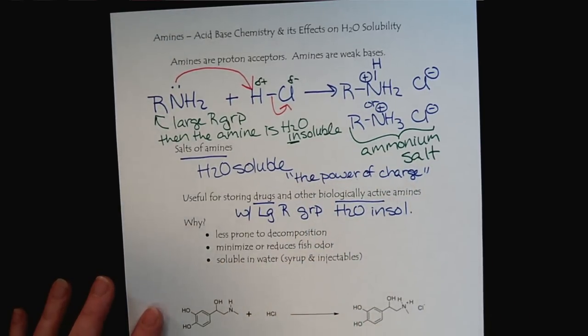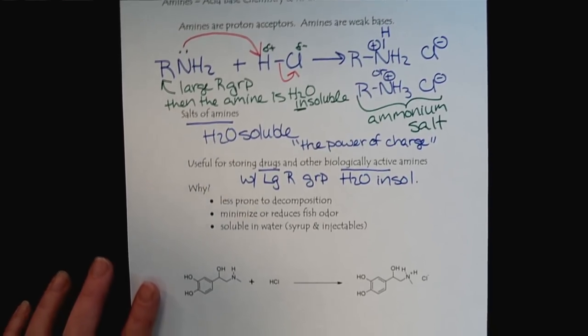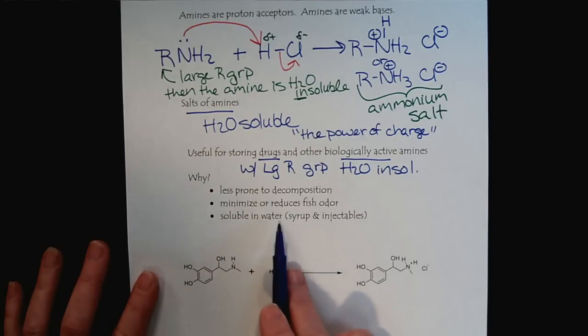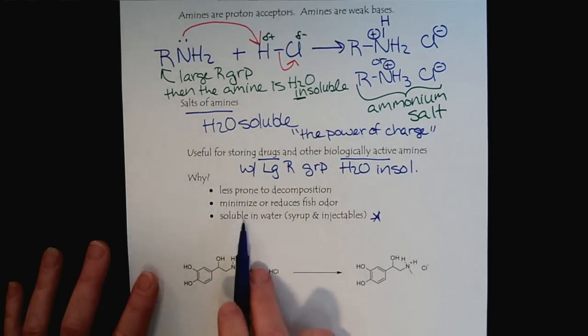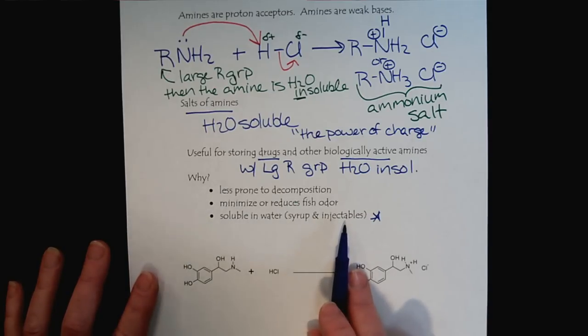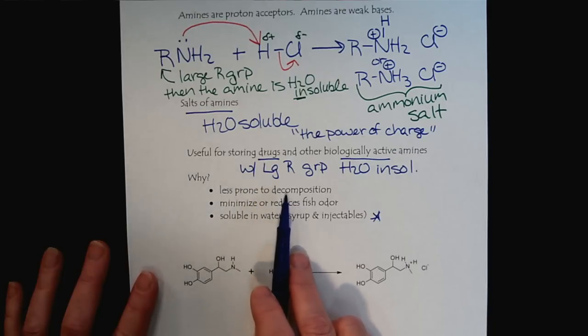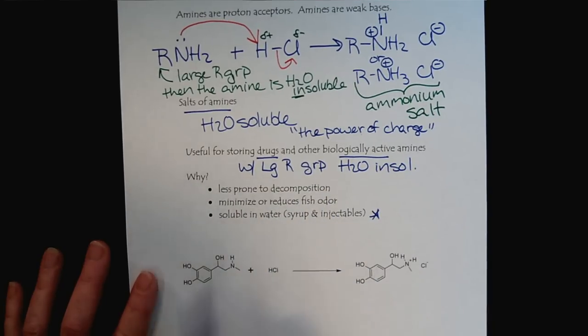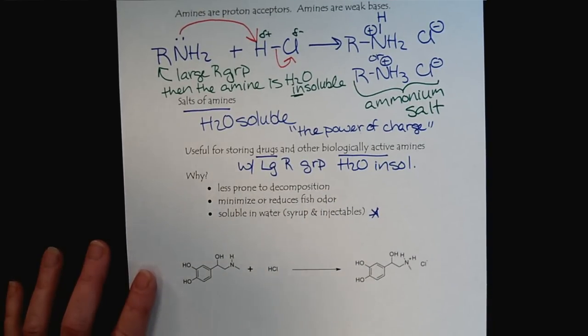We want to make these amines into the ammonium salts. There are several reasons for this. We want to create something that's water-soluble, so we can put it in a syrup to drink, or inject it, or put it in an IV. Another thing is that amines are very unstable, and they're prone to decomposition. The ammonium salts are much more stable. And last but not least, amines tend to be very stinky, and have like a rotten fish odor. When we make them into the salt, the odor goes away.